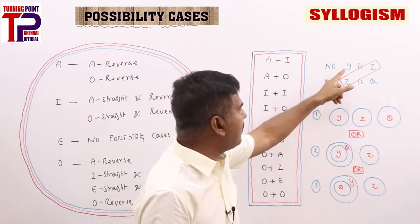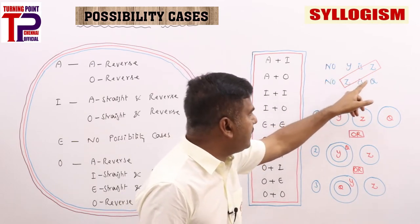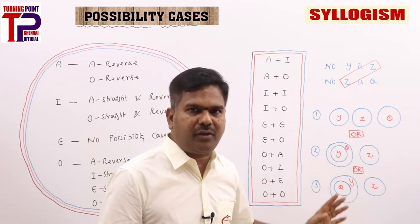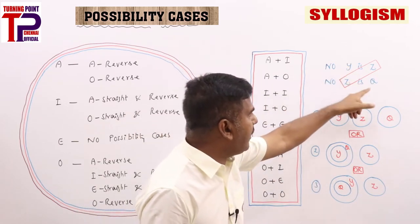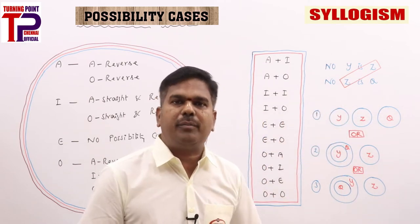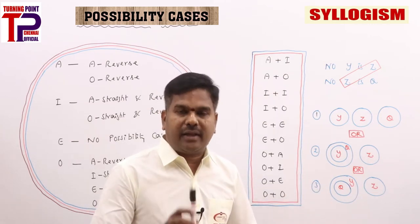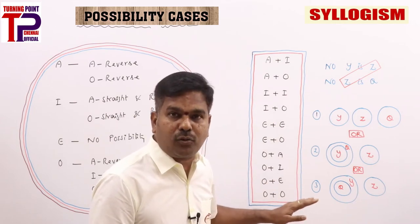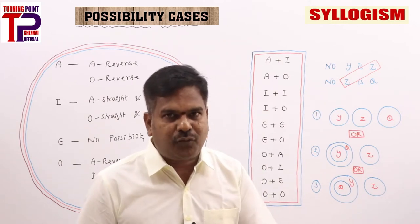E plus E gives no conclusion. From immediate inferences only: 'no Y is Z' can be converted to 'some Z is Y,' 'some Y is not Z,' 'some Z is not Y,' and similarly 'some Z is not Q,' 'some Q is not Z,' 'no Q is Z.' If anyone says all Y is Q, no Y is Q, some Y is Q, some Y is not Q — these won't follow because E plus E gives no conclusion. But as far as possibility cases are concerned, if statements fall under categories where you get no conclusion based on six rules, all possibilities follow.